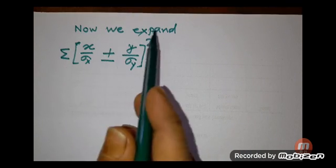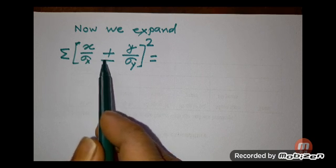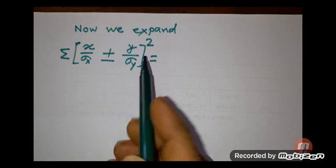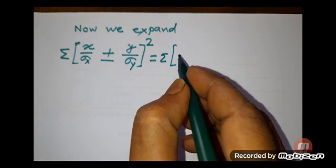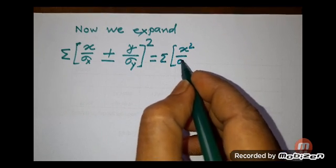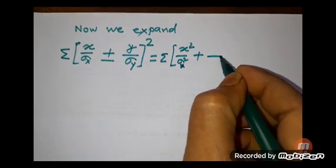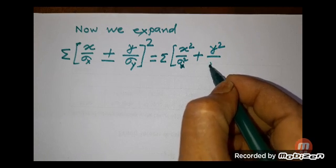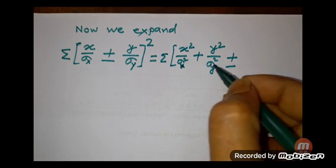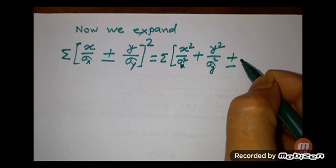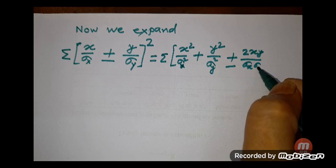Now, we expand the summation of (x/σx ± y/σy)² which equals summation of x²/σx² plus y²/σy² plus or minus twice xy divided by σx times σy.